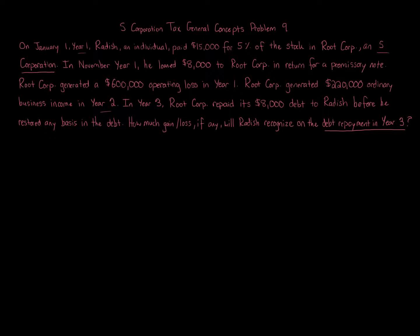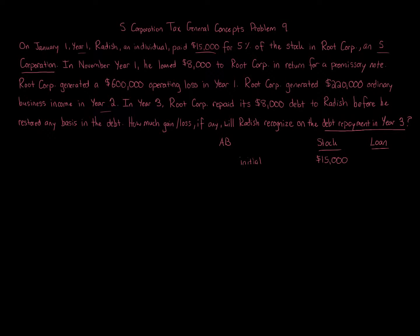On the left side we'll look at the allocation of items; on the right side we'll look at basis. Initially we have stock and loan amounts — we keep them together but separate. Stock basis: initially paid $15,000. Loan basis: loaned $8,000. So we start with $15,000 stock basis and $8,000 loan basis.